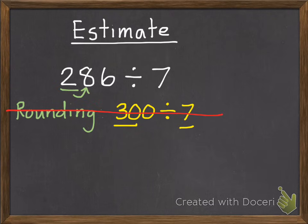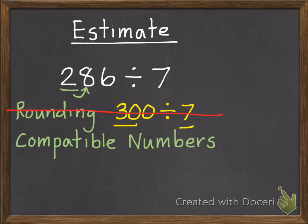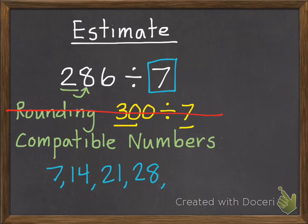What we're going to use is those compatible numbers. So compatible numbers, once again, are numbers that you can compute easily and mentally. So since we're dividing by 7, the numbers that 7 goes into easily are 7, 14, 21, 28, 35, 42, and so on.